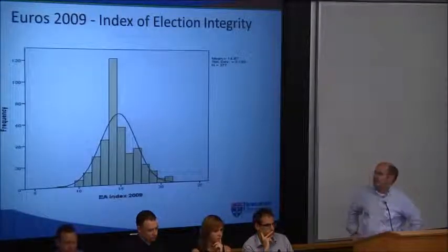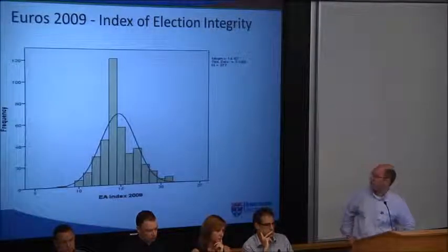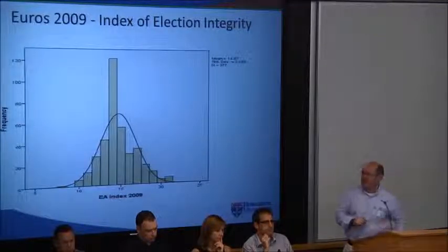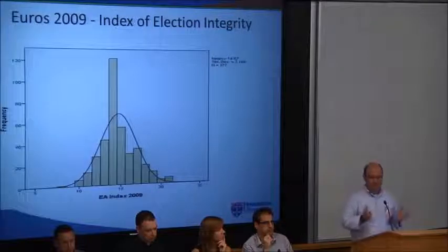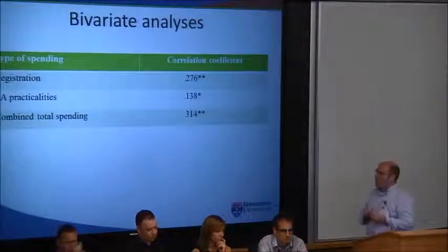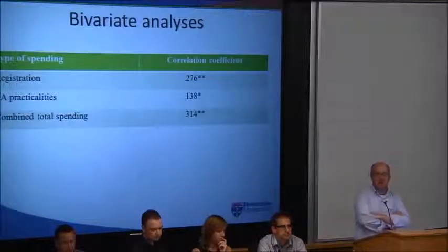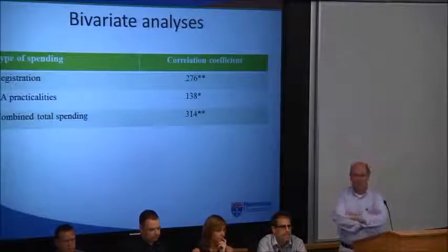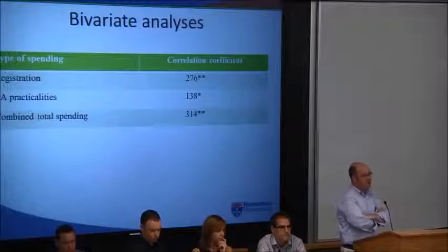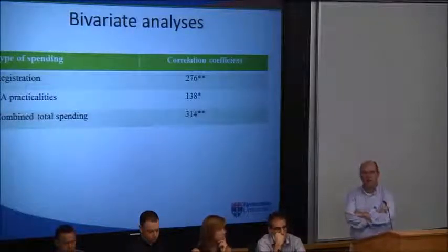This gives you a sense of the distribution of electoral administrative performance from the index. The average score is around 14.6, with most grouping in the middle, but some local authorities clearly performing quite well and others not that well — so a fair range of performance in electoral administration. Bringing this together with the spending data, a quick bivariate correlation shows the relationship is at least in the expected direction: total spending has a coefficient of 0.314, significant at the 0.01 level. Registration is also in the same direction and statistically significant. The practicalities of delivering elections show a weaker correlation and slightly weaker significance. But all three, at the bivariate level, are pointing in the direction we would hope to find.